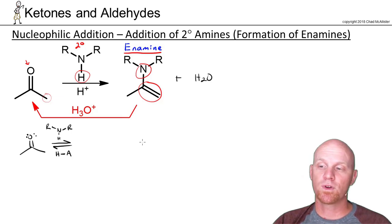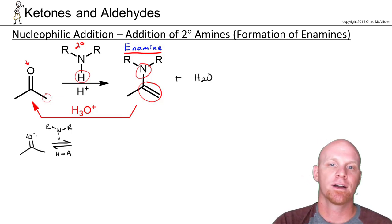But it's also a six-step mechanism, really similar to what we saw with primary amines, with one key difference at the end where we get that hydrogen. So let's take a look at this mechanism.